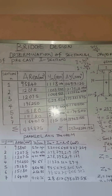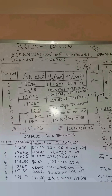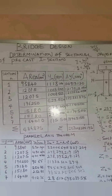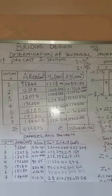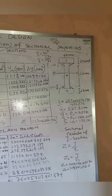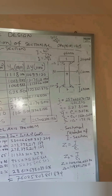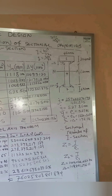Looking at the sectional modulus results, we've been able to calculate the moment of inertia of the I-section and also the sectional modulus. The section has been divided into seven sections; the areas of each section have been taken, and using the parallel axis theorem, we've determined the moment of inertia. We can now proceed to determine the moment of inertia of the composite section.